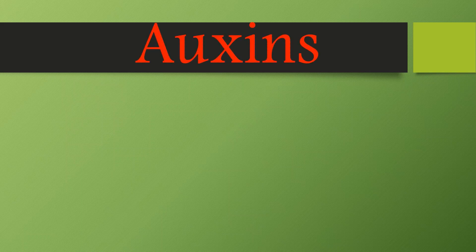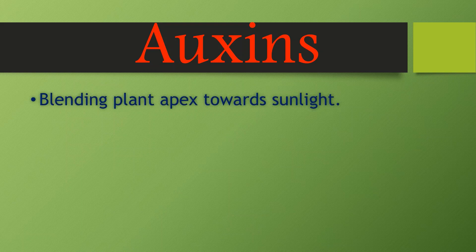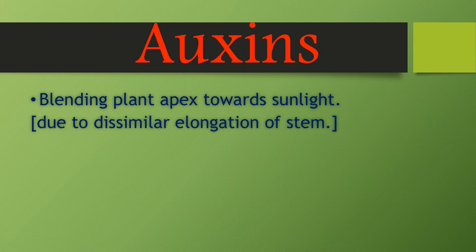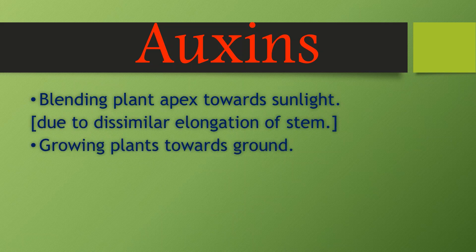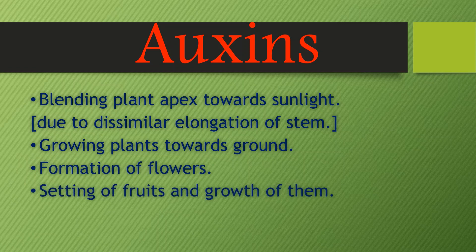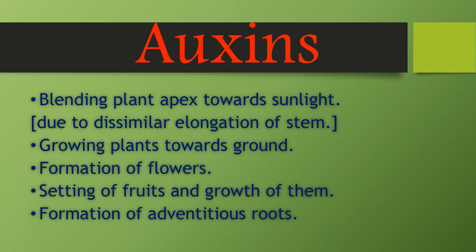First, we look at auxins. Auxins cause bending of the plant toward sunlight, growing plants toward the ground, formation of flowers, setting of fruits and growth of them, and formation of adventitious roots.